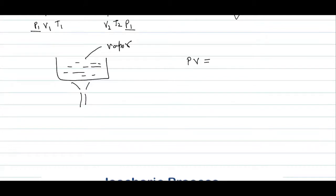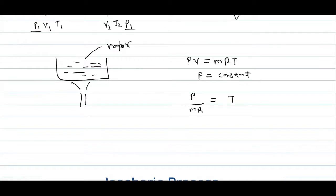Let's understand the isobaric process in the context of the ideal gas equation: PV = mRT, where m is mass and R is the gas constant. Since P is constant, we can write P divided by mR equals T divided by V, making that term a constant C. Therefore V is directly proportional to T, which is nothing but Charles' Law.